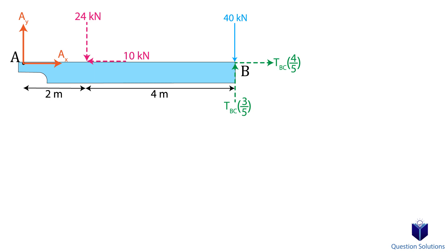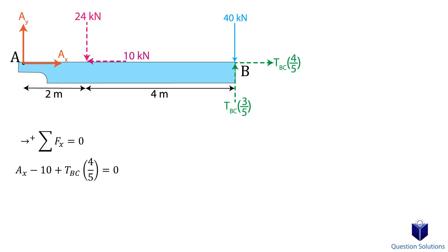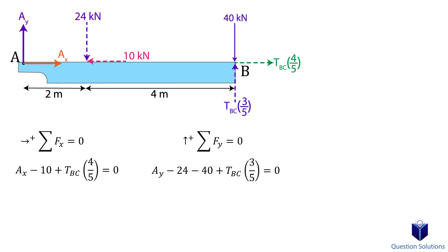Now it's time to write our equations of equilibrium. First, we consider the x-axis forces. For this object to stay in equilibrium, the sum of all forces in the x direction must equal zero. We assume right to be positive. So we have Ax, then the 10 kN force — which is negative because it faces left — and the x component of the tension in the rope. All of this added together equals zero. Next, an equation for the y-axis forces, assuming up to be positive. We now have two equations with three unknowns, so we need one more equation.